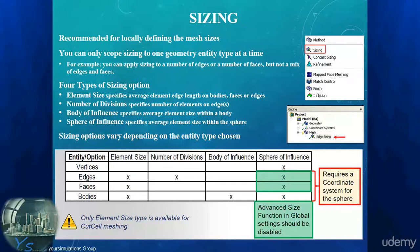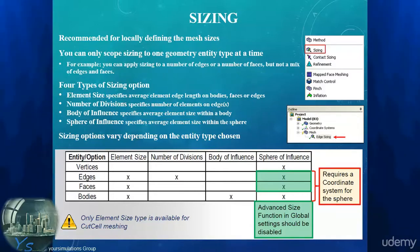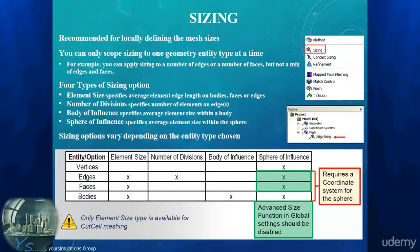There are four sizing options, but not all of them can be used with each entity type — the table shows the valid combinations. For vertices, we can only use a sphere of influence. Edges allow specifying the element size, the number of divisions along the edge, and a sphere of influence. For faces and bodies, we can only specify the element size or a sphere of influence. Bodies can also be used as a body of influence.